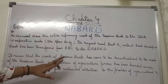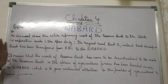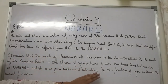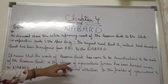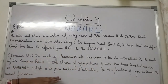This means that the work of the Reserve Bank has been decentralized. The role of the Reserve Bank in the sphere of agriculture and finance has been handed over to NABARD, which gives undivided attention to the problems of agriculture and rural finance. Decentralized means dividing responsibilities into smaller groups, as opposed to centralized, where one body handles everything.